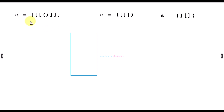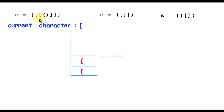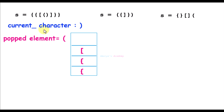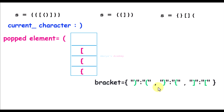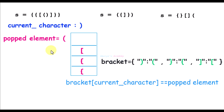Here we have an example. The first character is an open bracket — add it to the stack. The next is also an opening bracket — add it. Next open bracket — add it. Next open bracket — add it. Now we have a closing bracket. We check: the stack is not empty, so we pop the element. The popped element and the current character — we check whether they are a valid match using a dictionary mapping each closing bracket to its corresponding opening bracket. Here it is a match, so we continue.